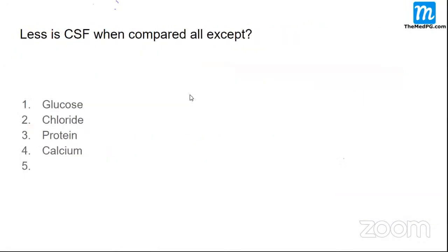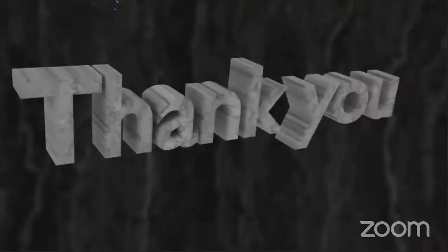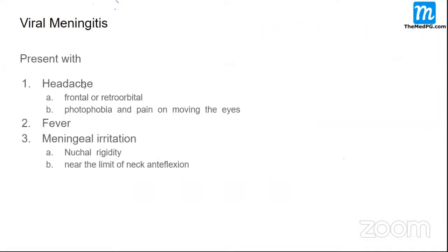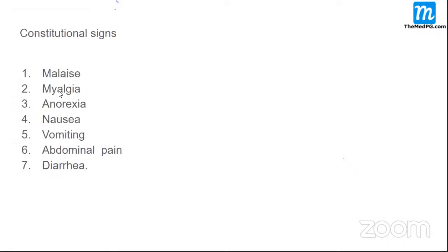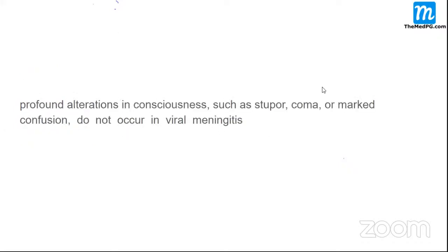These signs are not specific to bacterial meningitis — they can happen in viral meningitis as well. Like bacterial meningitis, viral meningitis also presents with headache and fever. In viral meningitis, constitutional symptoms like malaise, myalgia, anorexia, nausea, vomiting, abdominal pain, and diarrhea are prominent — more so than in bacterial meningitis.